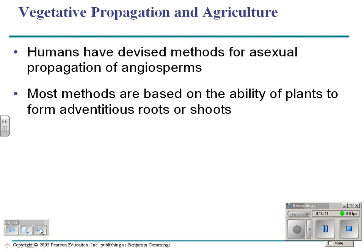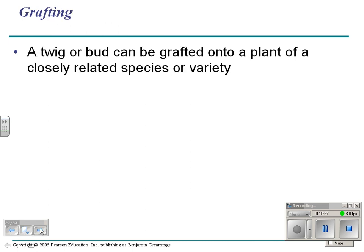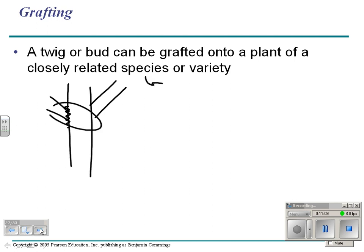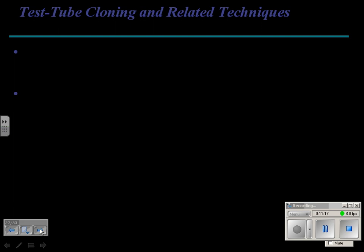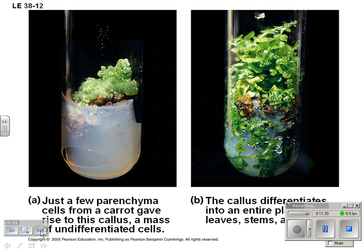People make a living asexually propagating angiosperms. We can clone them from cuttings — taking plant fragments and making more plants. We can also graft: take a twig off one tree, cut the bark, and graft it onto another. Many apple trees you see are grafted. In Mr. Bollinger's class, students do test-tube cloning — taking a few parenchyma cells from a carrot, forming a callus, and growing a new carrot plant in an agar medium.